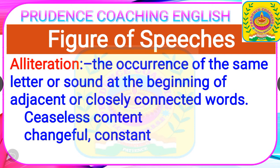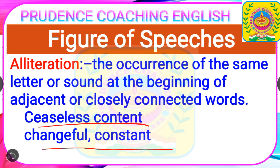The first figure of speech is alliteration — the occurrence of the same letter or sound at the beginning of adjacent or closely connected words. In this poem, alliteration is used in 'ceaseless content' and 'changeful constant,' where the letter C is repeated.